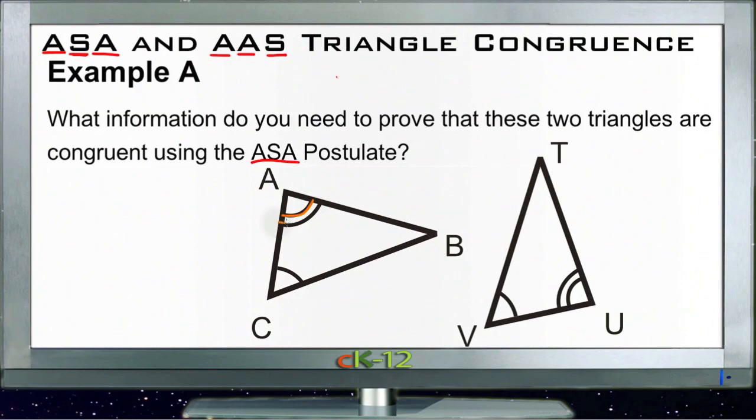Now we can see here that angle A is congruent to angle U, and that angle C is congruent to angle V. So all we need in order to use angle-side-angle is that side in between them. So if we can prove that side VU is congruent to side AC, then we can show that the two triangles are congruent. But until we know that that's the case, we don't know whether or not they're congruent.